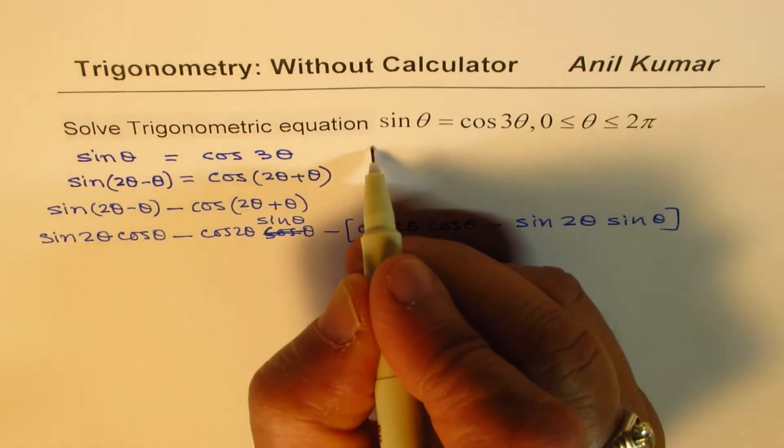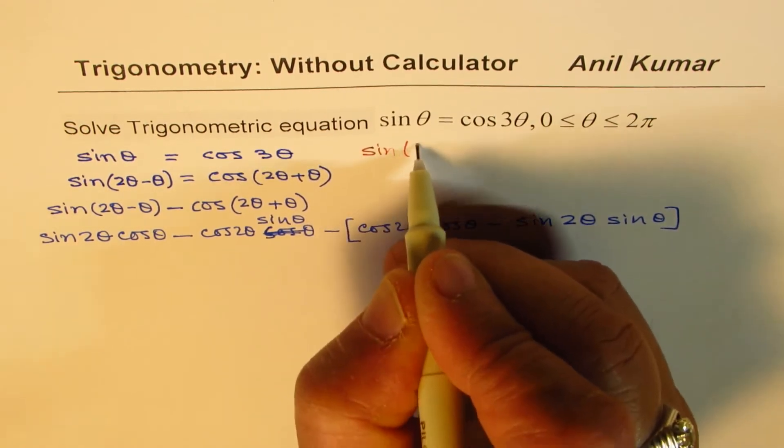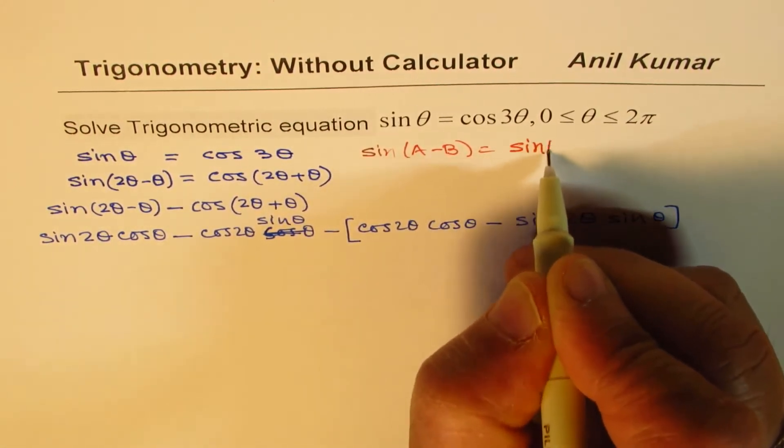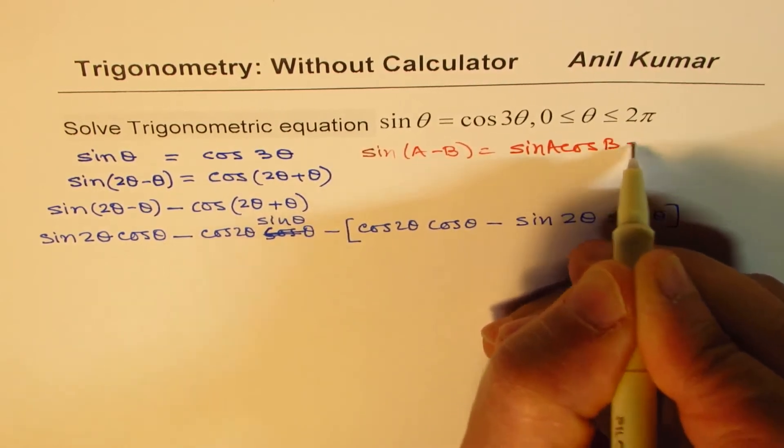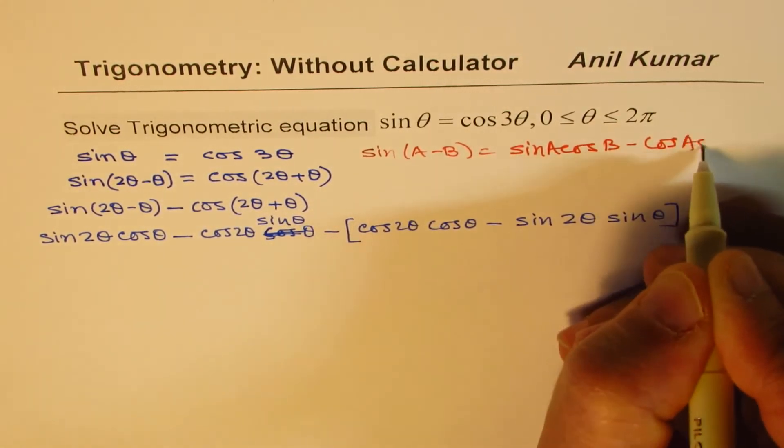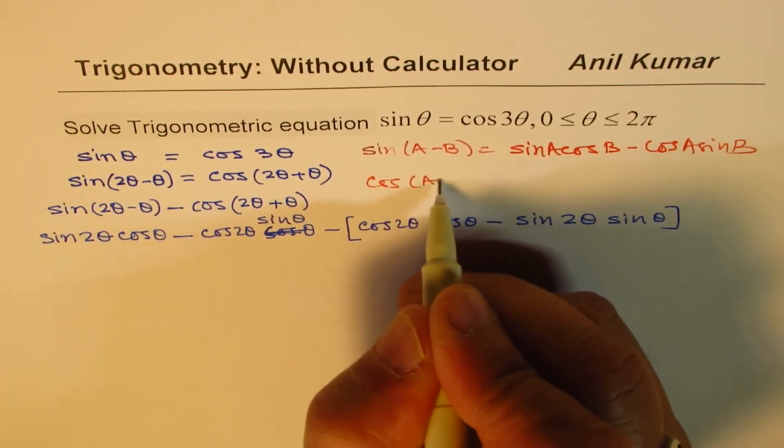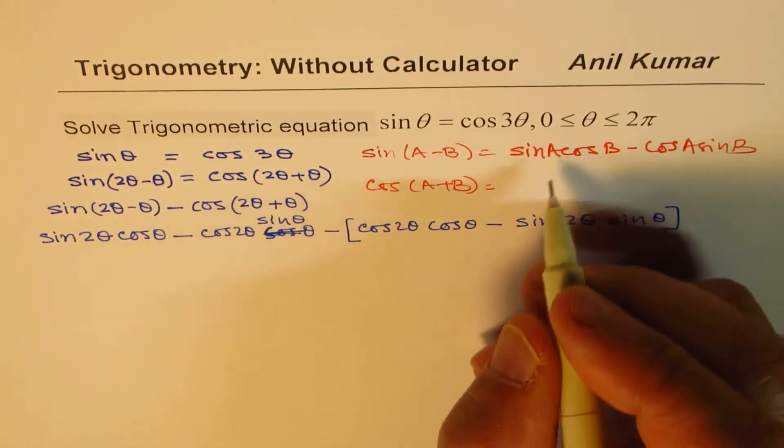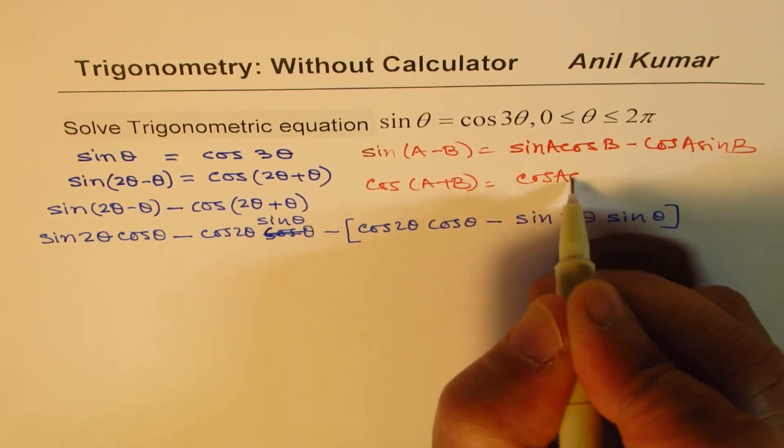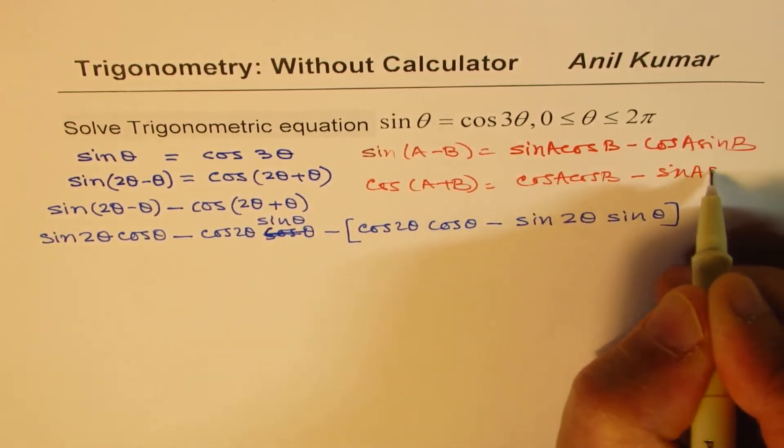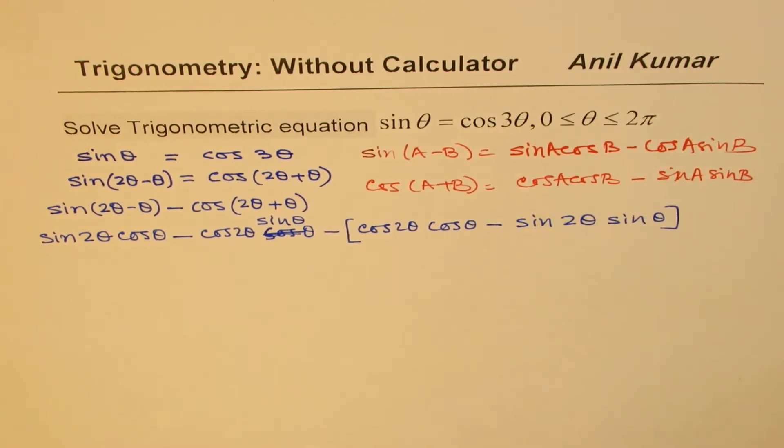So in this case, we have used the formula sine A minus B equals sine A cos B minus cos A sin B, and cos A plus B is cos A cos B minus sine A sin B.